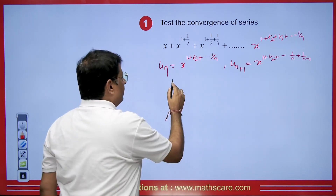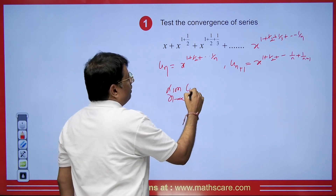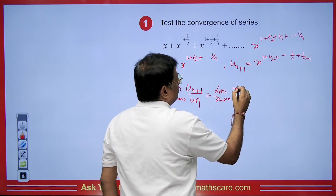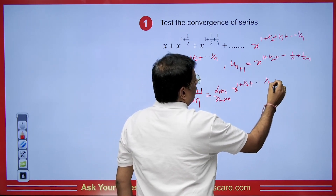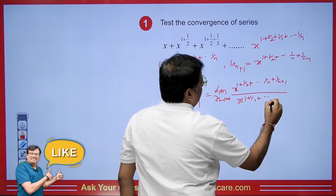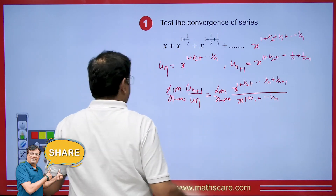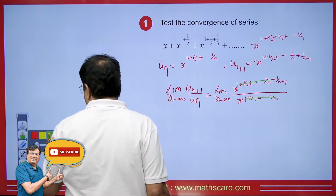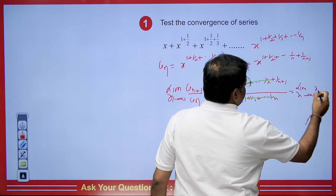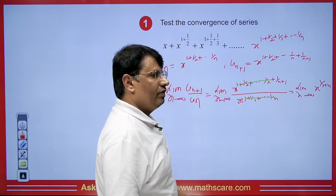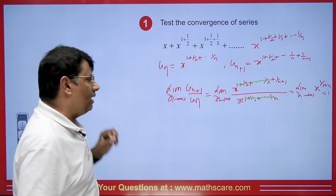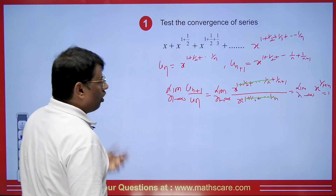We apply the D'Alembert ratio test: limit n→∞ of U_{n+1}/U_n = limit n→∞ of x^(1/(n+1)). As n→∞, the exponent goes to 0, so this equals x^0 = 1. Since the value comes to 1, the test fails. Whenever the test fails, we apply the logarithmic test.